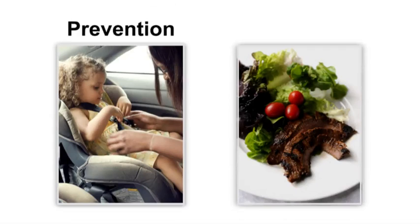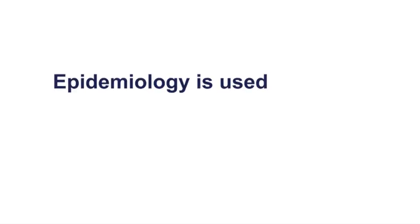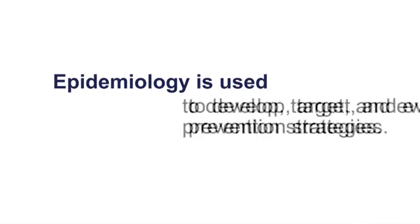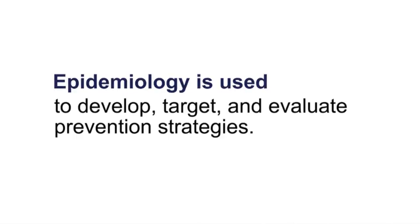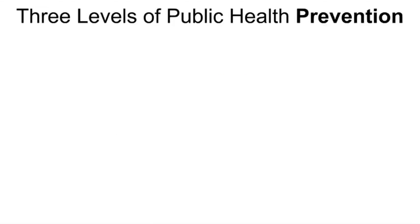First, prevention, such as raising public awareness about the need for child car seats, and interventions, such as promoting healthy eating by lowering the cost of healthy foods. Epidemiology is used to develop, target, and evaluate prevention strategies. There are three levels of public health prevention.